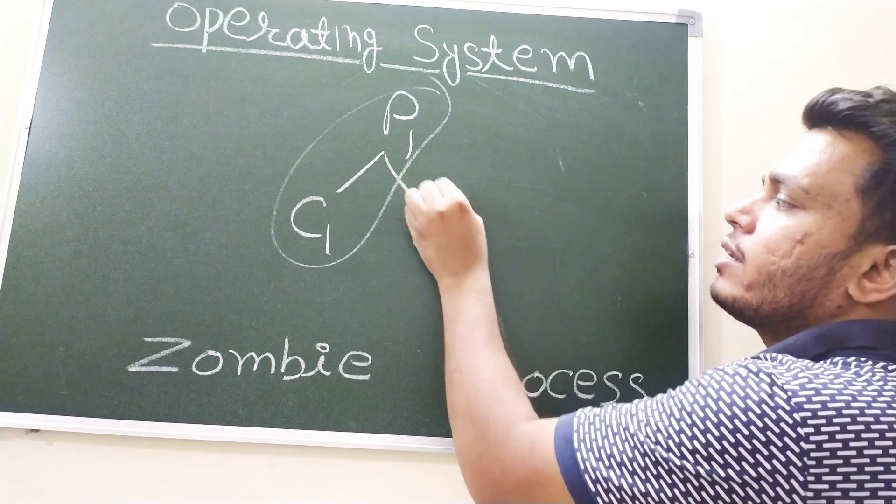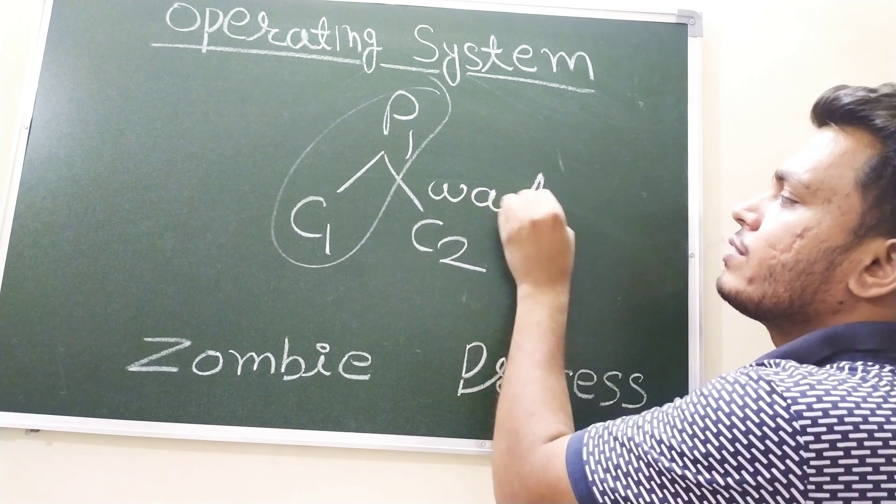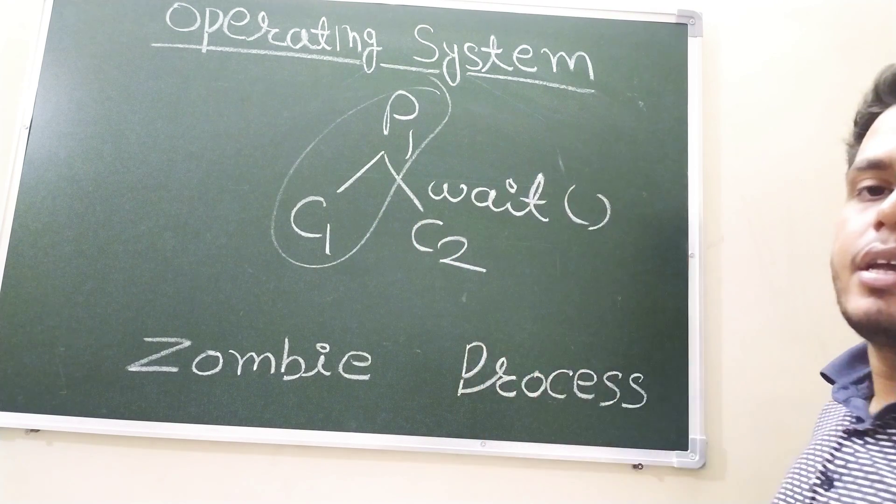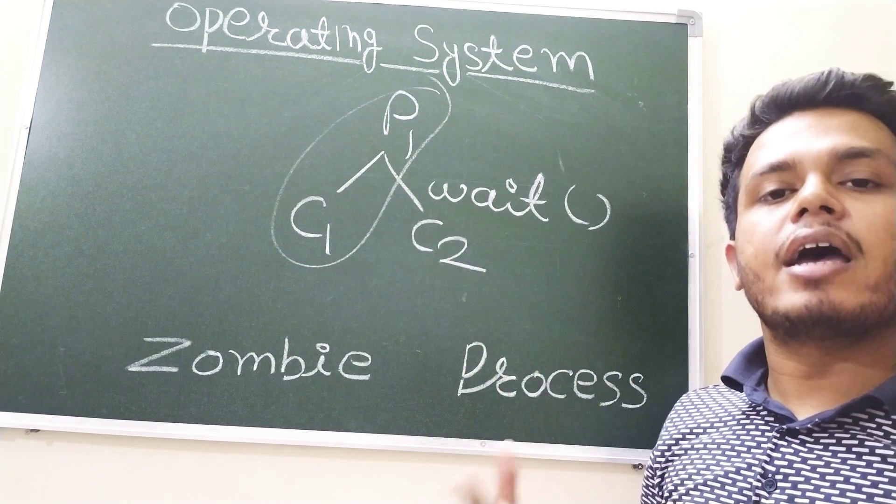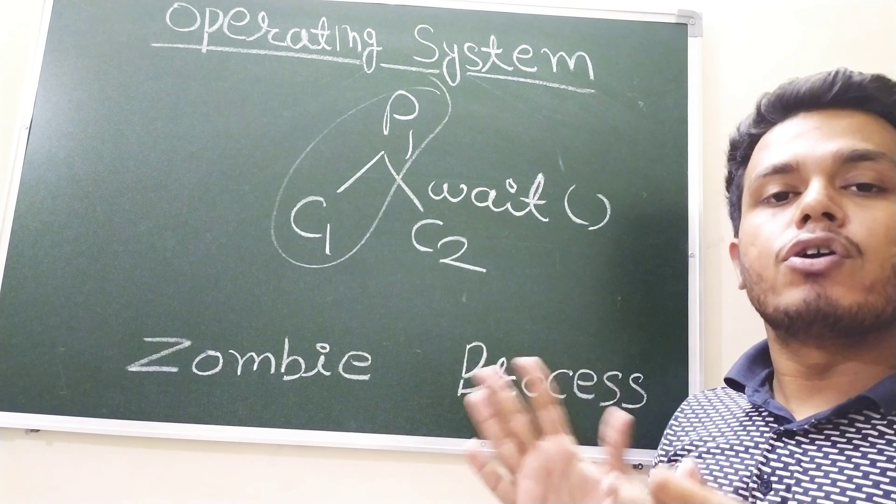there is a system call done by the parent process which is known as wait. If parent is not giving this signal, child cannot communicate that I have completed or I want to exit.